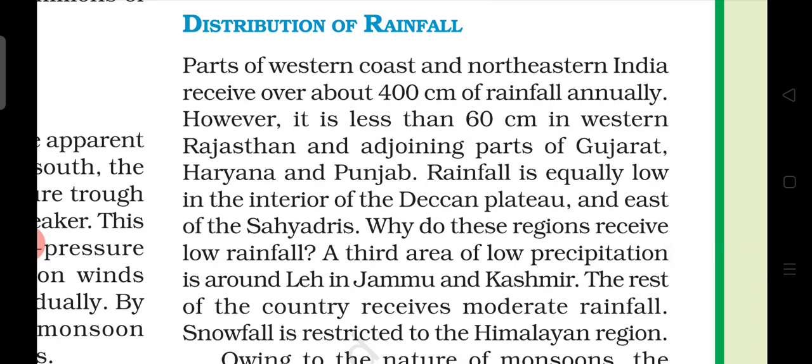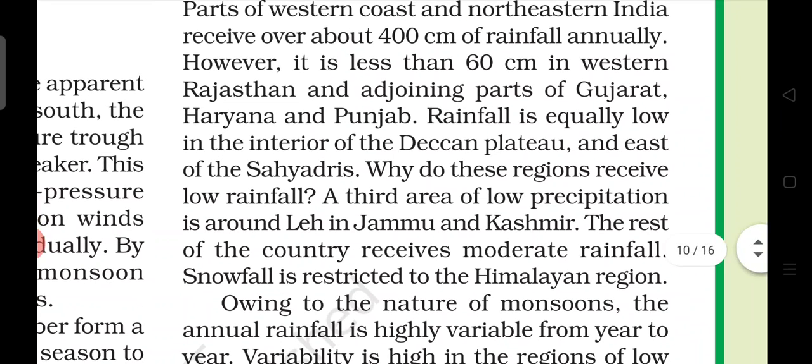However, it is less than 60 cm in the western Rajasthan. So in different parts, our north-western part or western part has 400 cm rainfall, whereas our western Rajasthan or adjoining parts of Gujarat, Haryana and Punjab only receive 60 cm of rainfall annually. Rainfall is equally low in the interior of the Deccan Plateau.